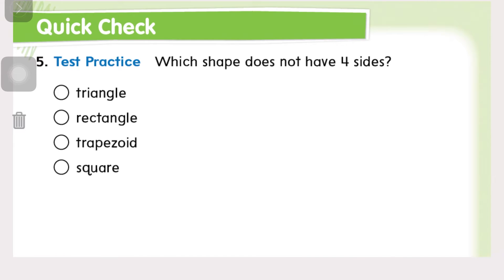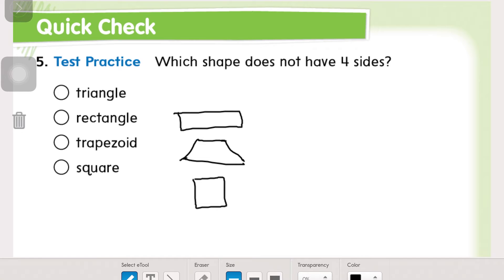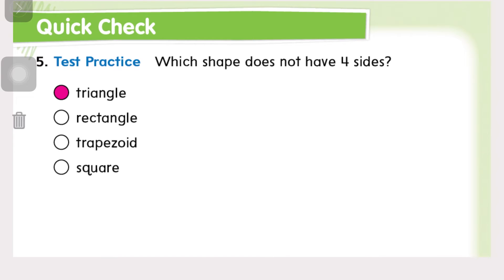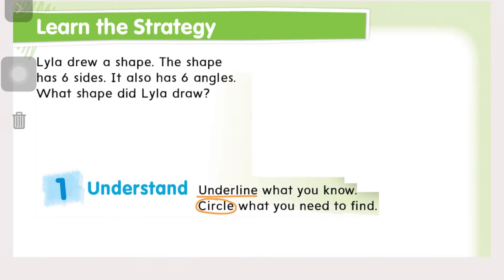So which shape does not have four sides? Triangle, rectangle, trapezoid, and square. Rectangle looks like this - that has four. Trapezoid looks like that - it has four. Square obviously has four. So it's got to be triangle. Remember tri means three, just like tricycle. So triangle is the correct answer.